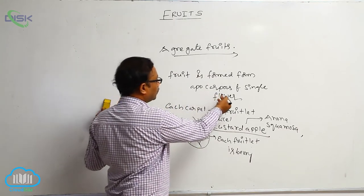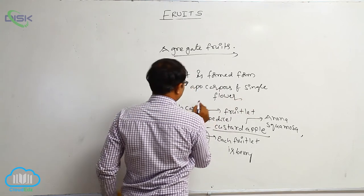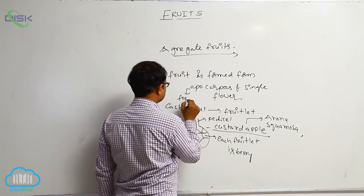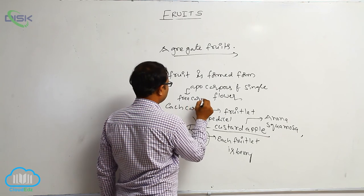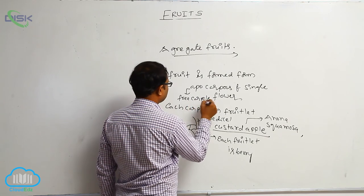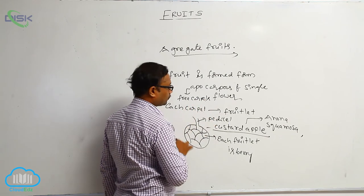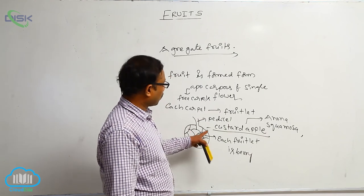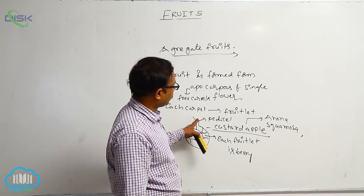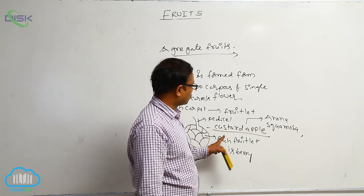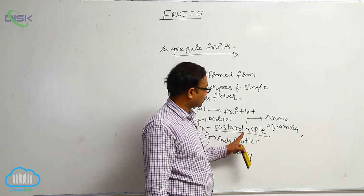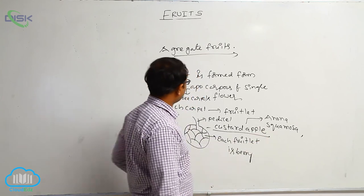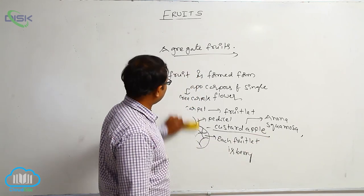Fruit is formed from apocarpous of a single flower. Apocarpous means free carpels. Each carpel is known as a fruitlet. All fruitlets are combined at the base of the pedestal to form a fruit, so that is known as a custard apple. Each fruitlet is known as the berry. Example: Annona squamosa.